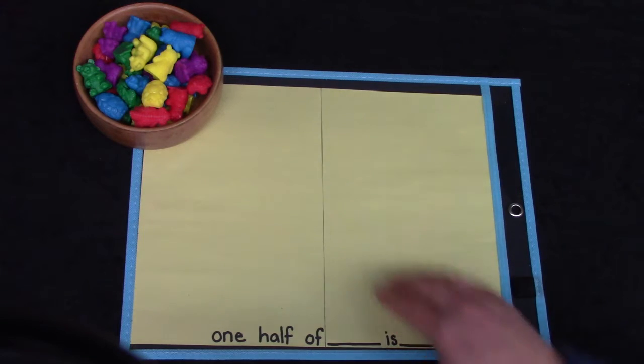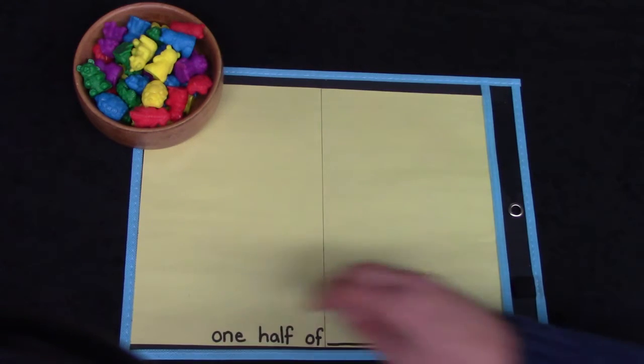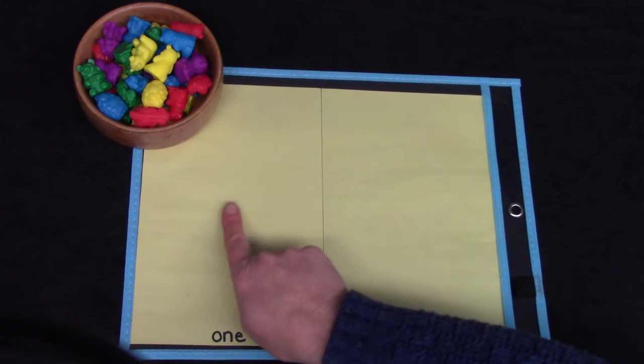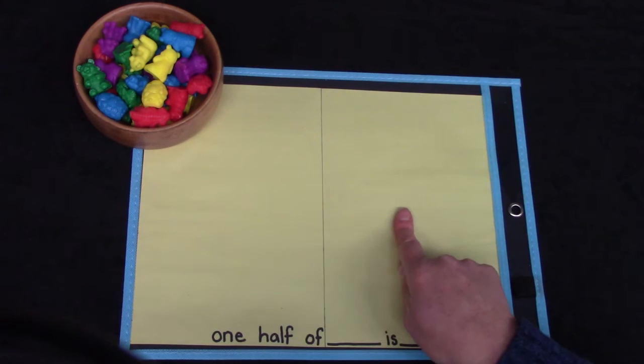This would be one half of the paper and this is one half of the paper. When we divide something in half, both sides need to be the same.